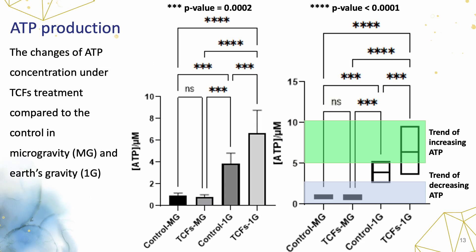In these bar and box graphs, the changes in ATP concentration under TCF treatment are compared to control samples in microgravity and Earth gravity. It was observed that applying TCFs increased the concentration of ATP by around 2 times in Earth gravity. However, changes under the microgravity environment were not significant. Interestingly, the observed enhancement in ATP production under the influence of TCFs is in line with previous studies in another experiment on HEC cells. Moreover, bacteria cultivated in microgravity revealed approximately 4 times lower ATP concentrations, implying that bacterial strains operate much more efficiently under microgravity conditions.